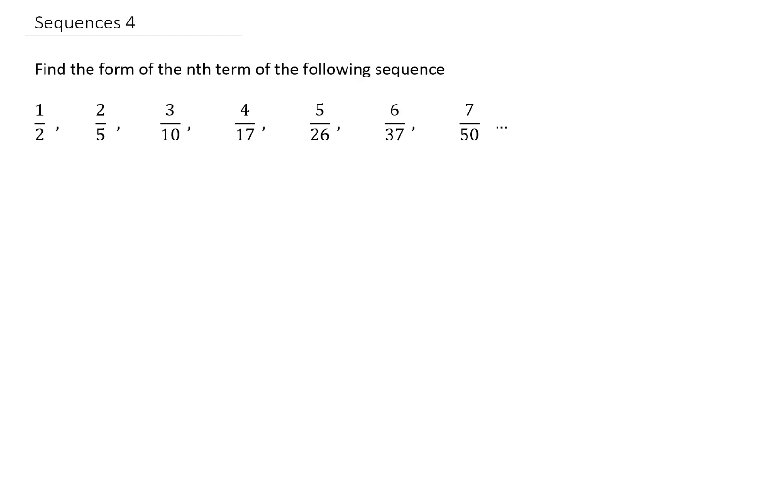Okay, let's do it. I think the pattern in the numerator is pretty clear. The numerator just goes 1, 2, 3, 4, 5, 6, 7, and so on, so the nth term is going to have just an n in the numerator.